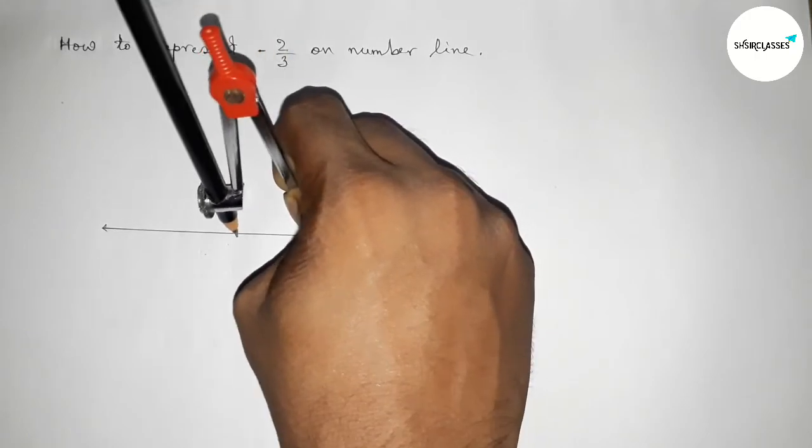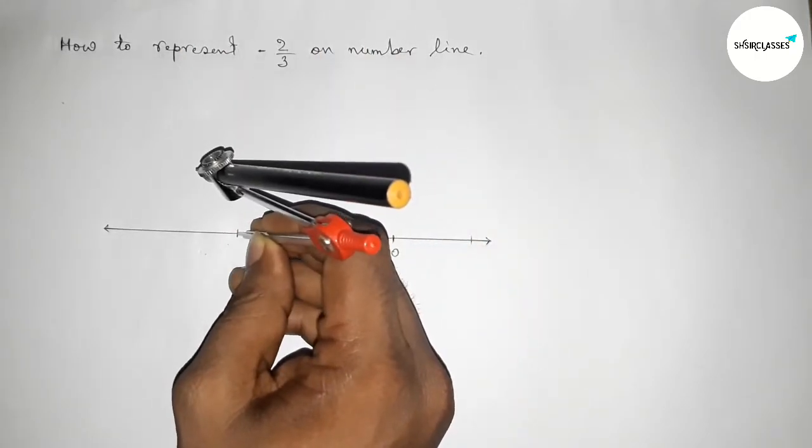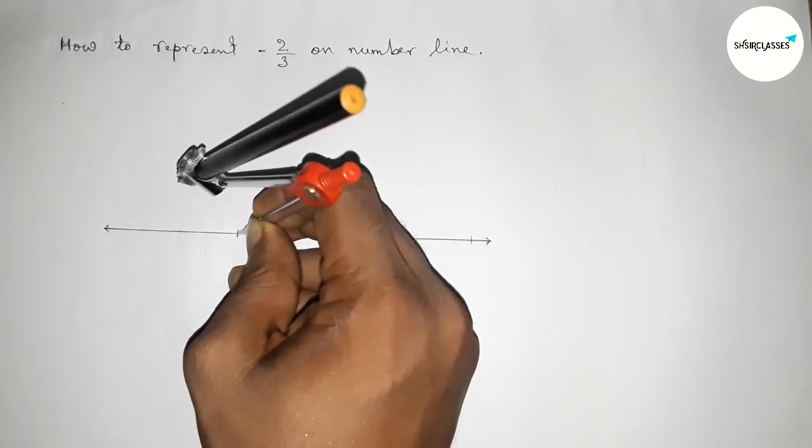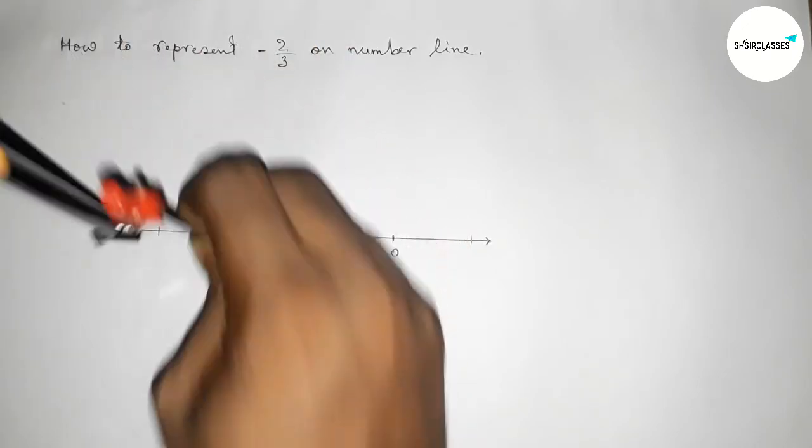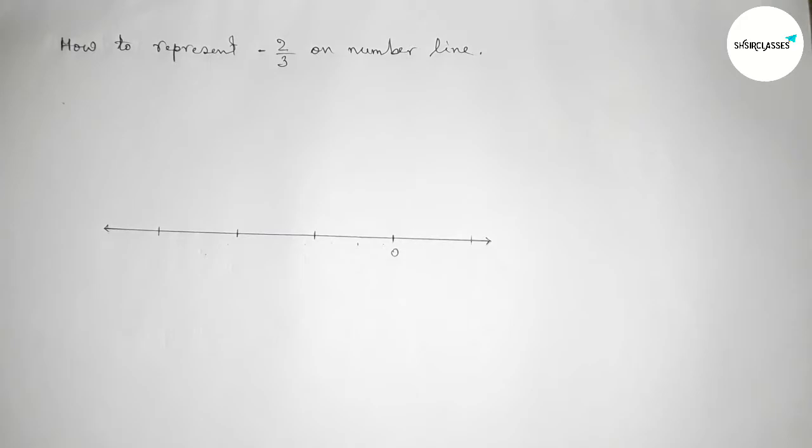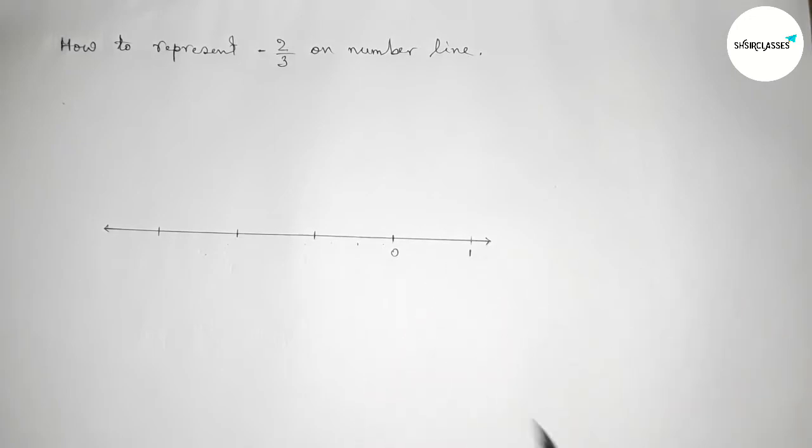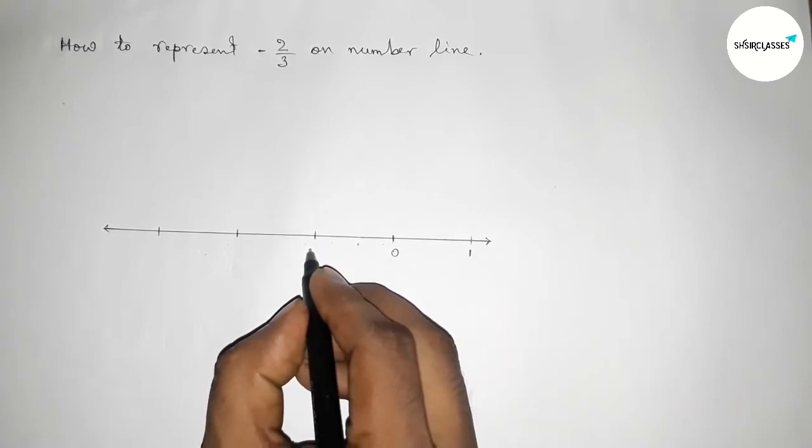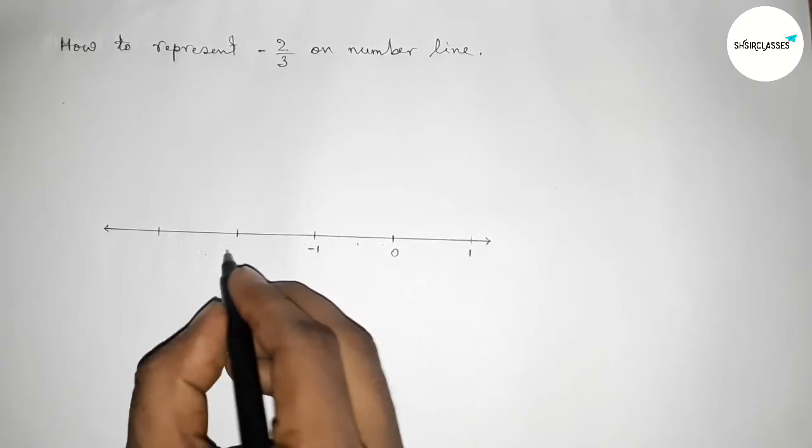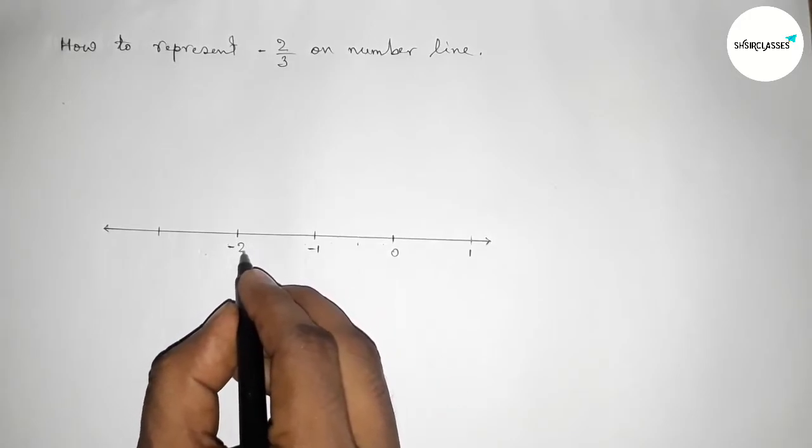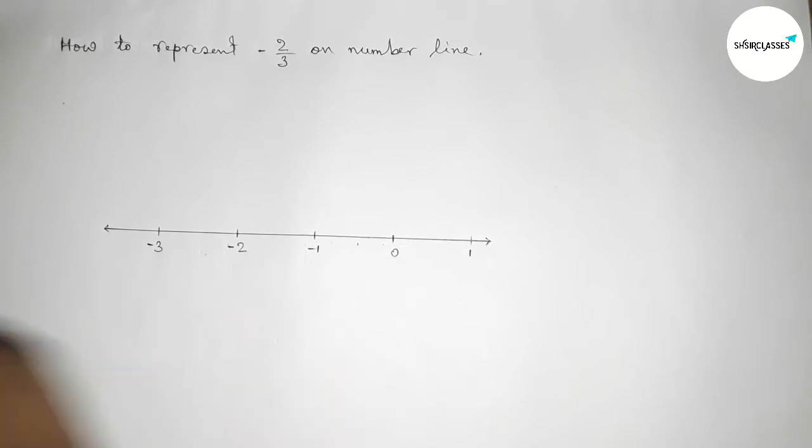So by this way we have to construct a number line, okay. So now this side will be 1 and continuous, and this side here minus 1, here minus 2, and here minus 3 and continuous.